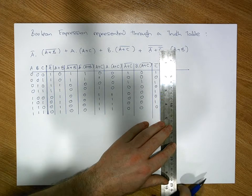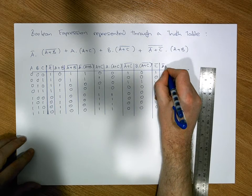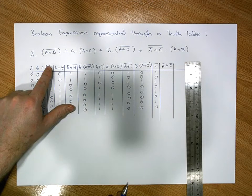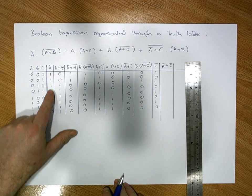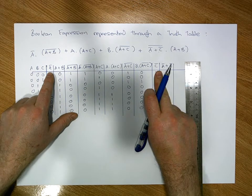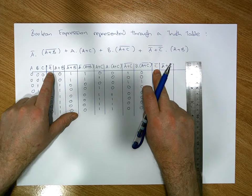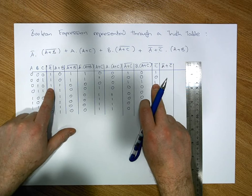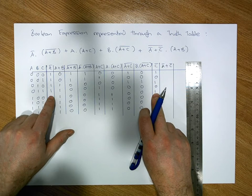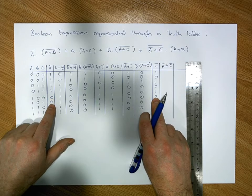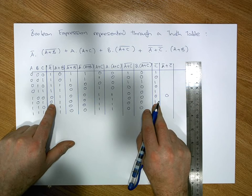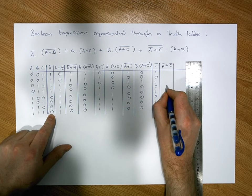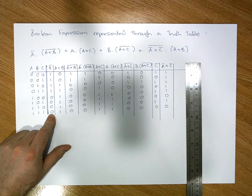Now we calculate A-bar OR C-bar using the A-bar column and the C-bar column. An OR only gives a zero when both inputs are simultaneously zero. Checking each row: most pairs are not simultaneously zero, except in one case (row six) where both are zero, giving a zero there. We also get a zero at the last row. That gives us our A-bar OR C-bar column with two zeros and six ones.